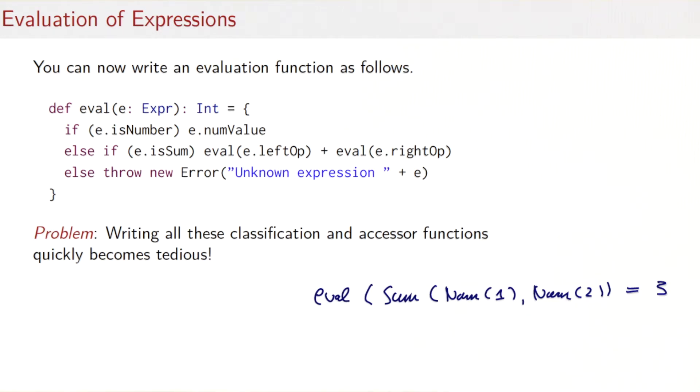And finally, we have to guard against the case that we might have another expression that is neither a number or a sum. Maybe not now, but maybe in the future somebody will add such a subclass of expression. So it's prudent to have a third clause which says, if it's neither a number nor a sum, then we throw an error which says, I found an unknown expression and here it is.